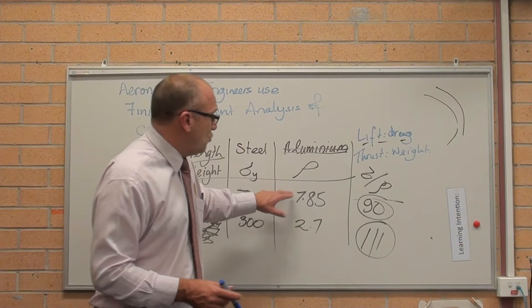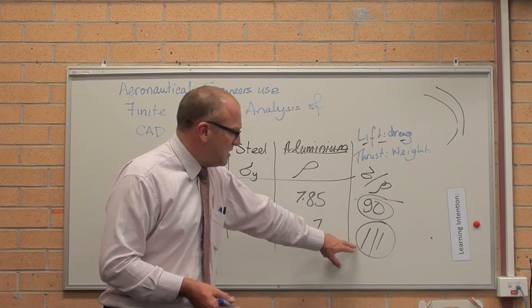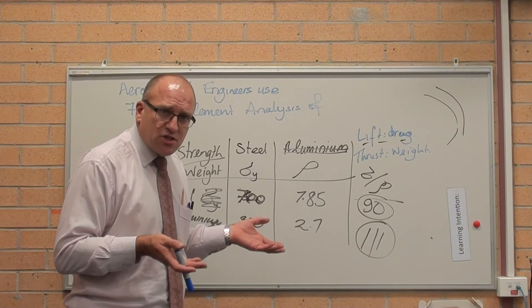A good aluminium has a yield strength of 300 to 350 megapascals. Density is 2.7 tonnes per cubic metre. Its strength to weight ratio is 110. There's not that much difference in the strength to weight ratio of steel and aluminium.